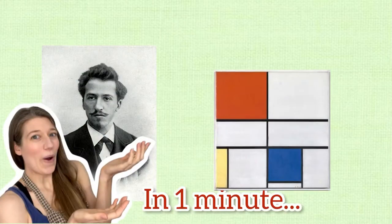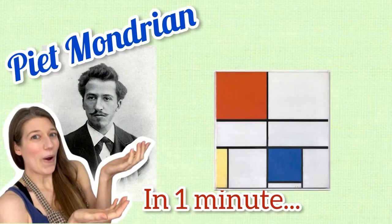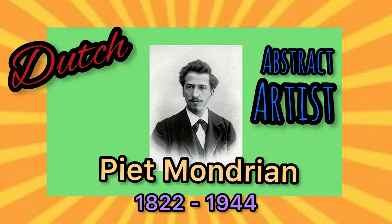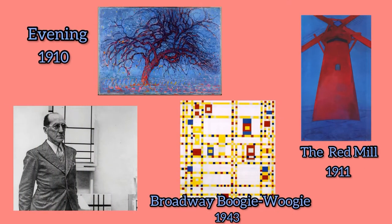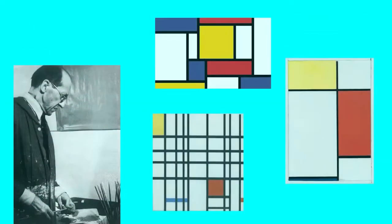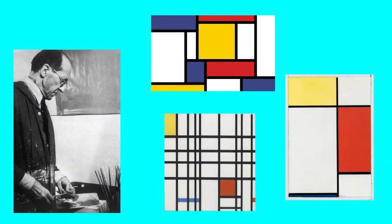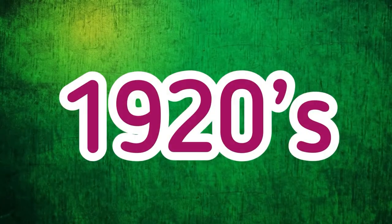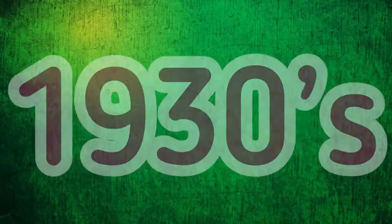I'm going to offer you a one-minute intro to Pierre Mondrian and neoplasticism. Pierre Mondrian is a Dutch-born abstract artist. While Mondrian is known for progressing through a range of styles, his most influential work was created primarily during the 1920s and 1930s.